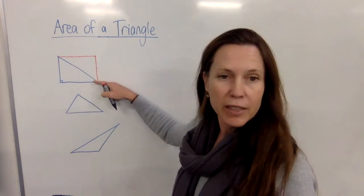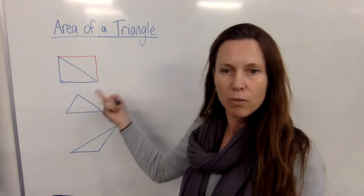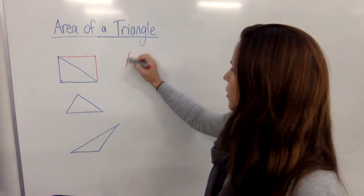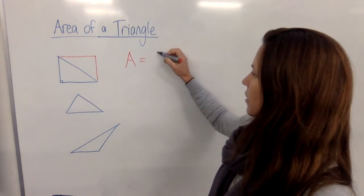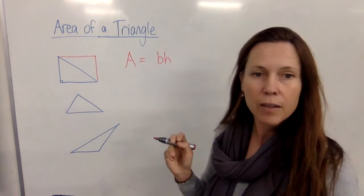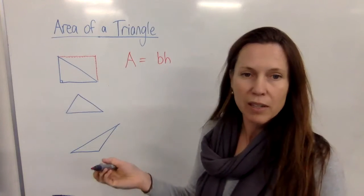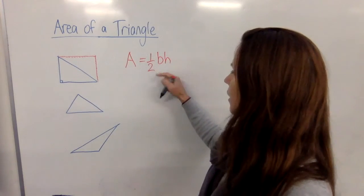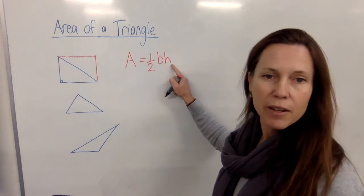Now that we know that the diagonal of a rectangle divides the rectangle into two equal sized pieces, if we know that a rectangle is base times the height, then the triangle must be half of that, and that gives us our formula: half times the base times the height.